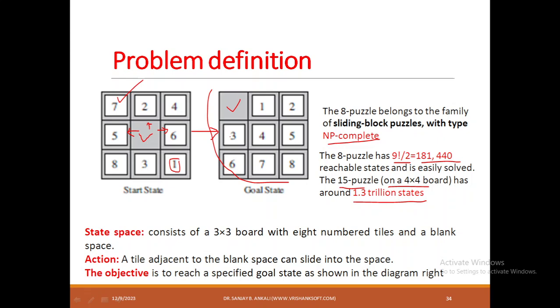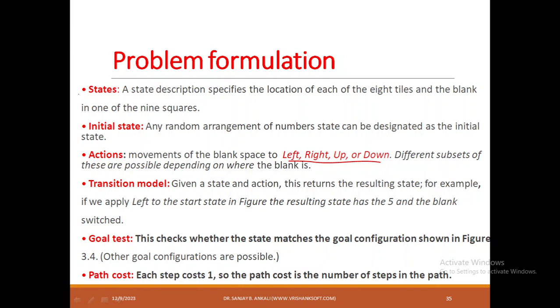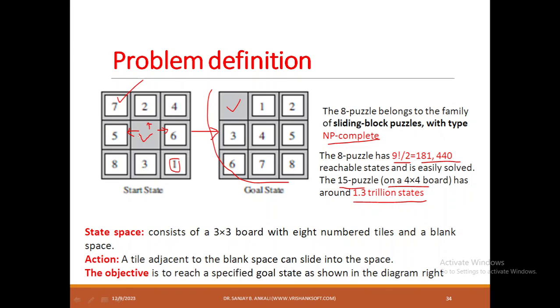Let us formulate this problem. The state is a 3×3 board with 9 squares and numbers 1 to 8 with a blank tile. The initial state, as I mentioned, is any random arrangement of numbers. The actions are moving the blank tile left, right, up, or down. If you move left, you swap 5 with the empty tile; if you move right, you swap 6 with the empty tile, and so on.